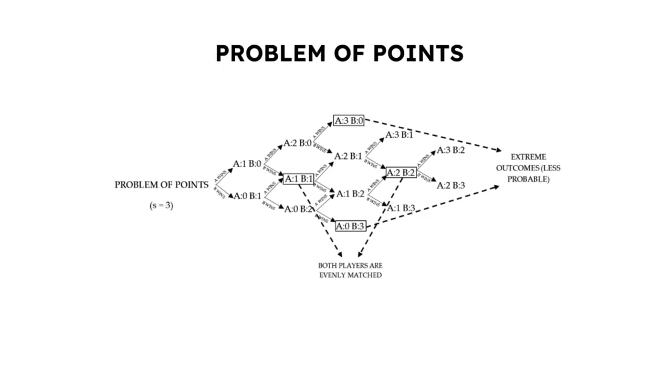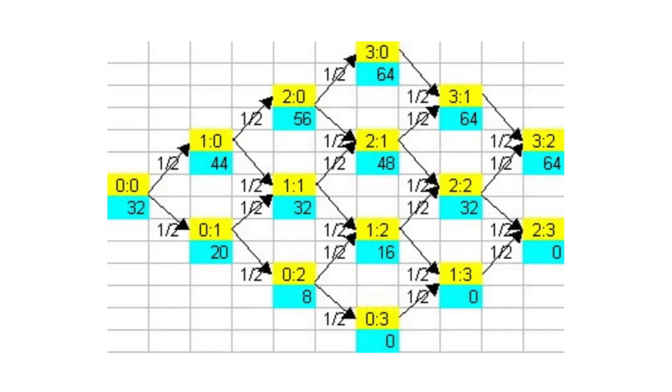Pascal and Fermat tackled what is now known as the problem of points, laying the groundwork for modern probability theory. They established a method to determine the probabilities of various outcomes and how to divide the stakes based on those probabilities. This was a revolutionary step in the study of chance and uncertainty.